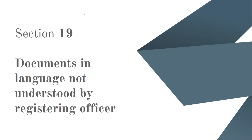Section 19 talks about documents in a language not understood by the registering officer. If a document presented for registration is in a language that the registering officer is unable to understand, or is not commonly used in that district, the officer will not register that document until it is translated.